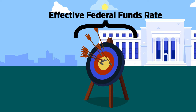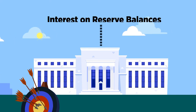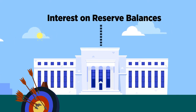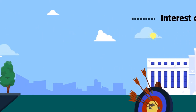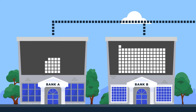So how does the Fed make sure this happens? It uses one of the interest rates that it sets, called interest on reserve balances. As the name implies, the Federal Reserve pays interest on the reserve balances banks hold in their accounts at their regional Federal Reserve Bank.